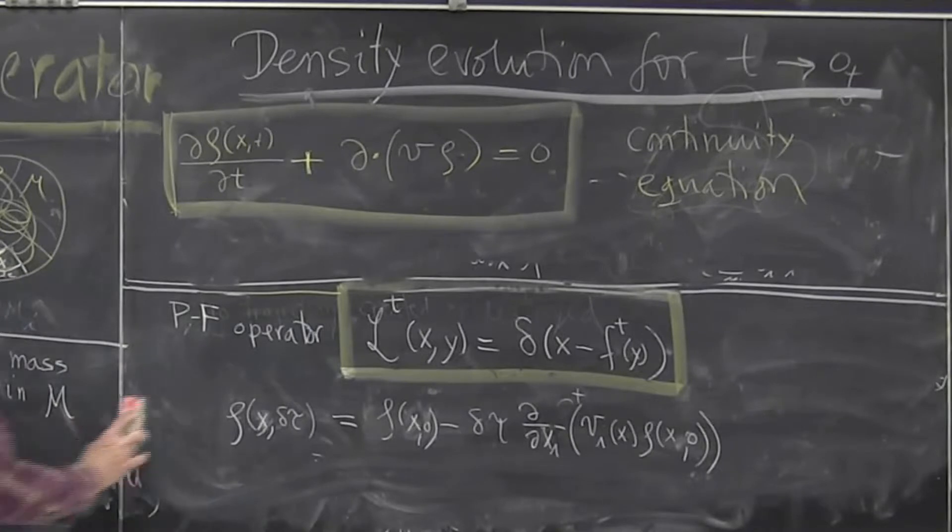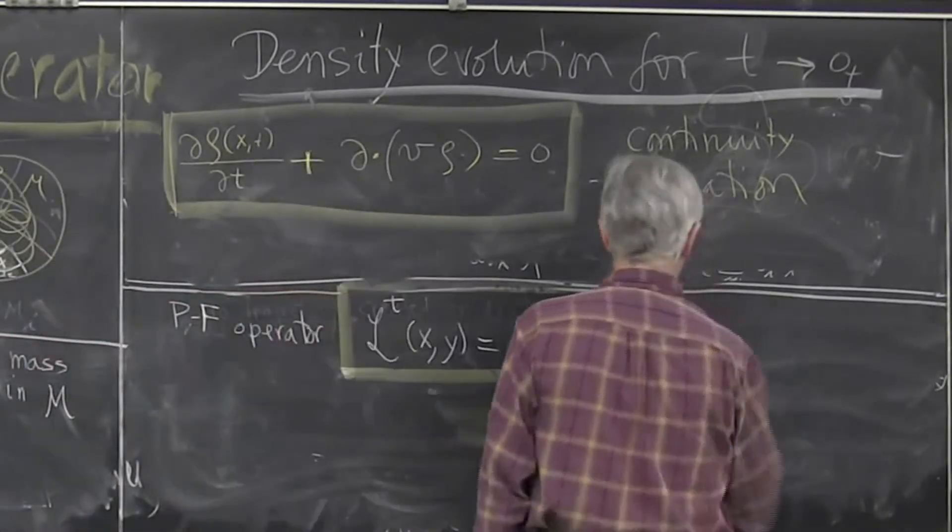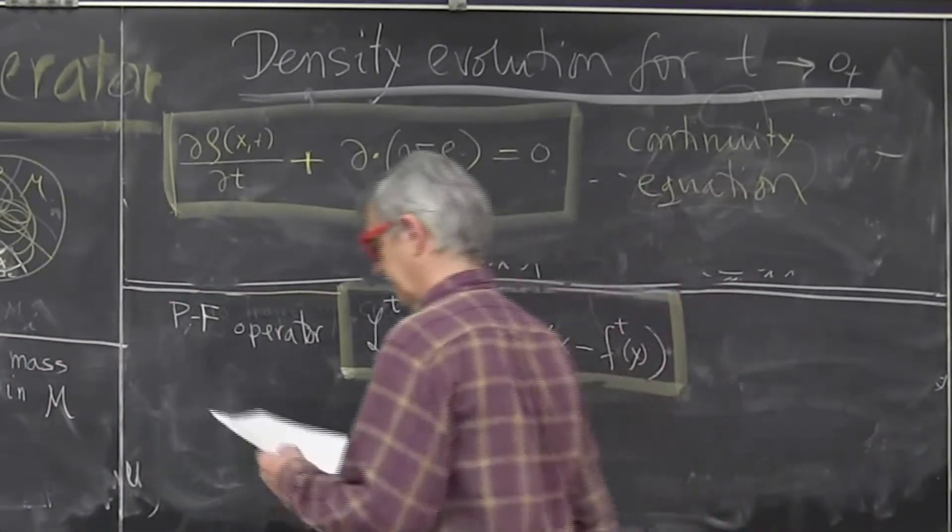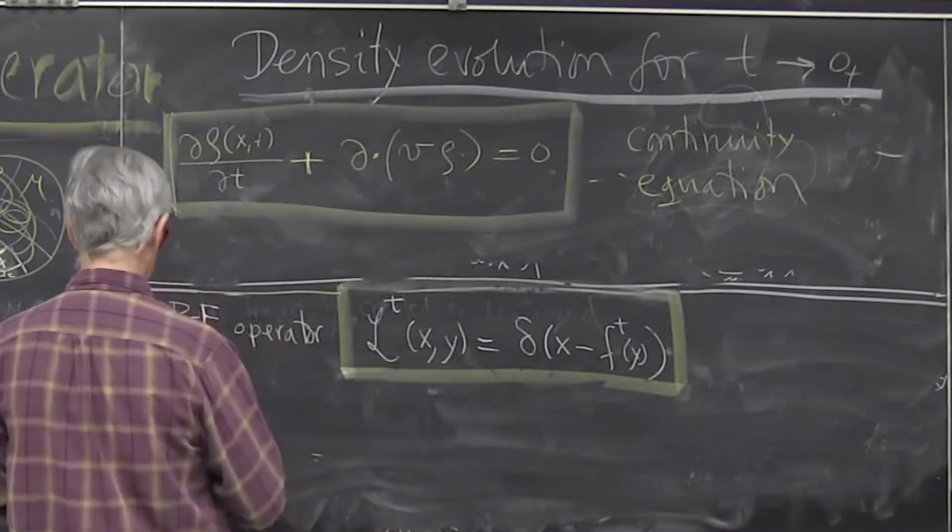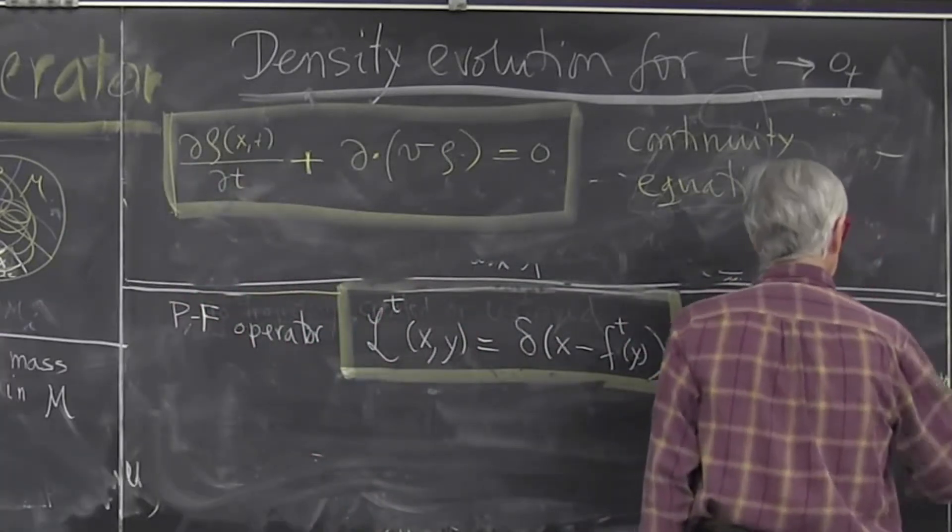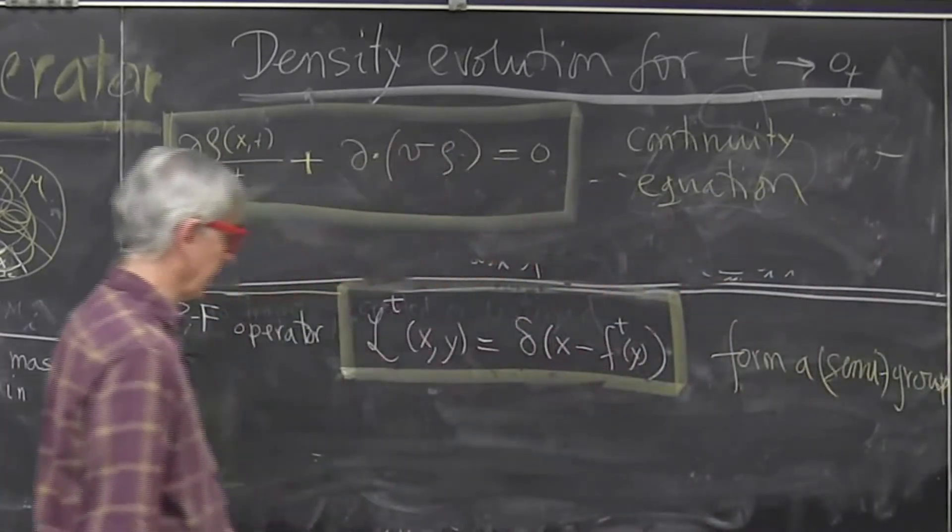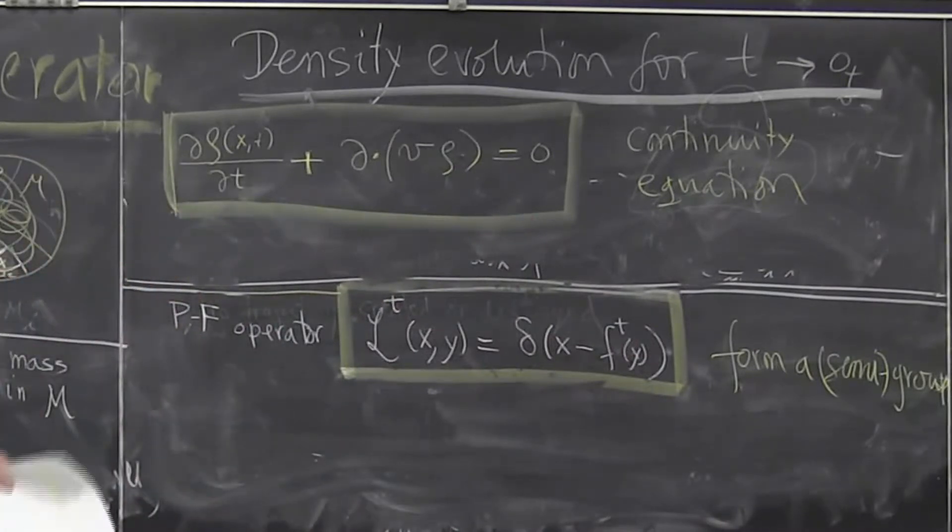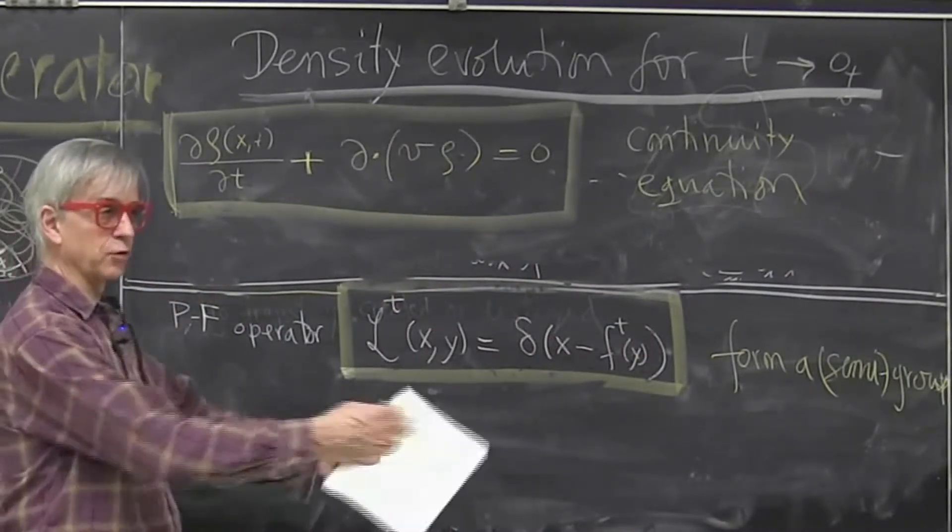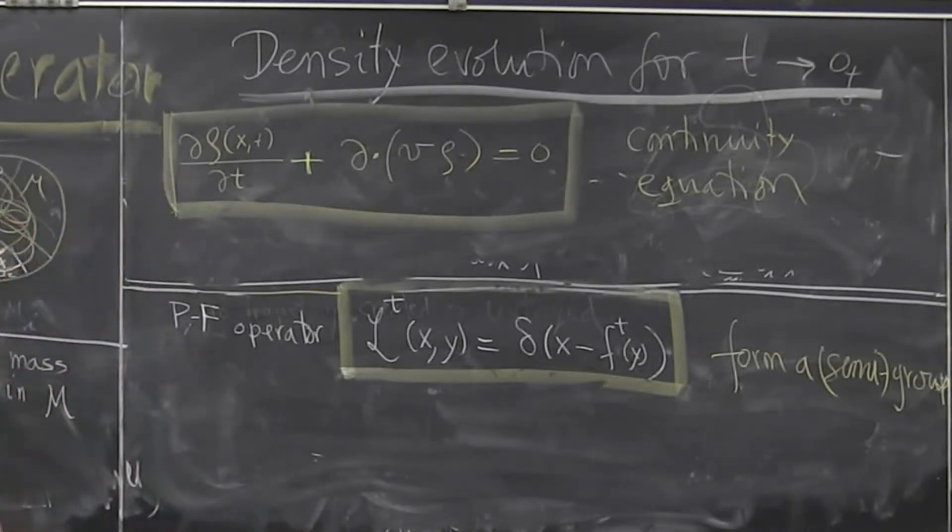What else can we say about these operators? Because they are just this delta function, it's easy to check that they form a semi-group. And the semi, it's a cautious thing. For finite dimension differential system, it's actually a group. You can go backward and forward. You can define.